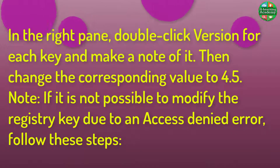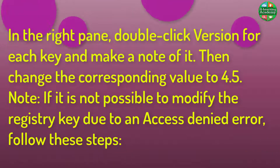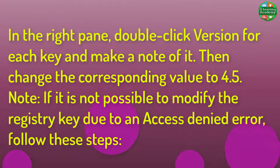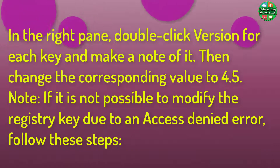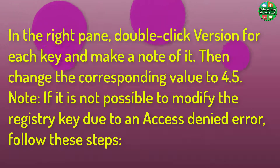Step 6: In the right pane, double-click the Version entry for each key, make a note of it, then change the corresponding value to 4.5. Note: If it is not possible to modify the registry key due to an access denied error, follow these steps.